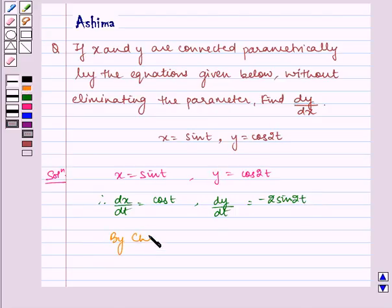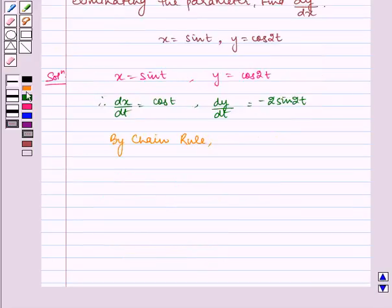Therefore, by chain rule, dy by dx equals dy by dt multiplied by dt by dx.